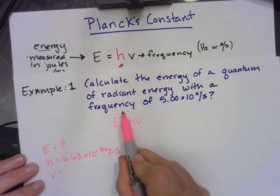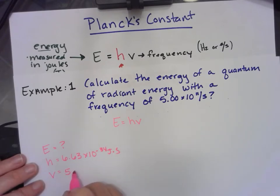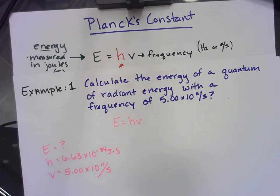And we have a frequency of 5.00 times 10 to the 11th cycles per second. So that many wave crests would pass in a second.